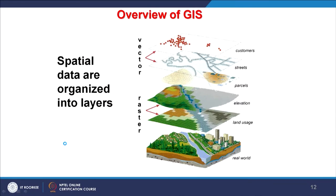In GIS, we store information in different layers or thematic layers. Starting from the real world — which has all kinds of data — we can segment the data to organize and efficiently store and analyze it on a GIS platform. The real world can be segmented into different layers or different types of spatial data. For example, a land use layer — that data nowadays we get from satellite remote sensing.